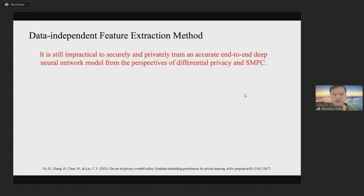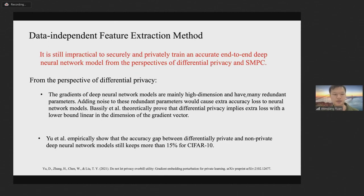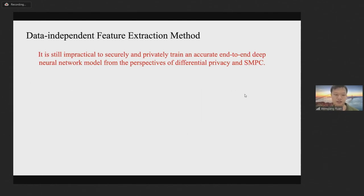From the perspective of differential privacy, the gradients of deep neural network models are mainly high dimension and have many redundant parameters. Adding noise to these redundant parameters would cause extra accuracy loss to neural network models. Bassily and others also theoretically prove that differential privacy implies extra errors with a lower bound linear in the dimension of the gradient vector. Recent studies also provide some empirical evidence. Yu and others empirically show that the accuracy gap between differentially private and non-private deep neural network models still exceeds more than 15%.